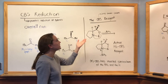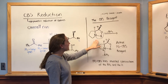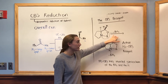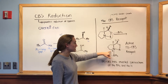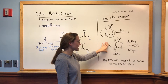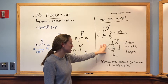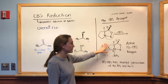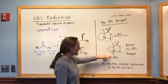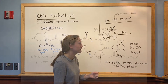The CBS reagent, or the Corey-Bakshi-Shibata reagent, is something that's made by reacting this molecule with borane, and that attaches the borane onto the nitrogen, which forms an active reagent. In this case, this is the active SCBS reagent. And if we were to have the RCBS reagent, there's inverted stereochemistry of the borane and the hydrogen at these positions, so those two would be coming towards us in the RCBS reagent.